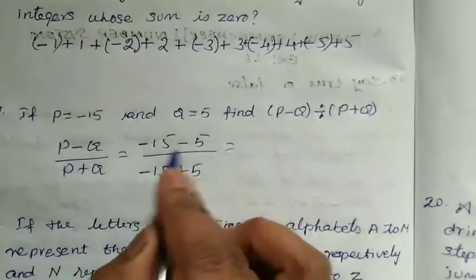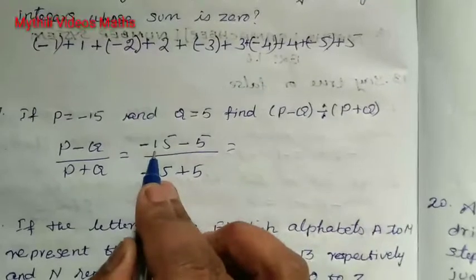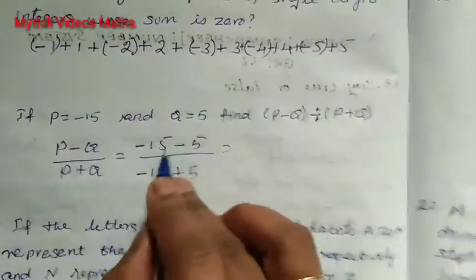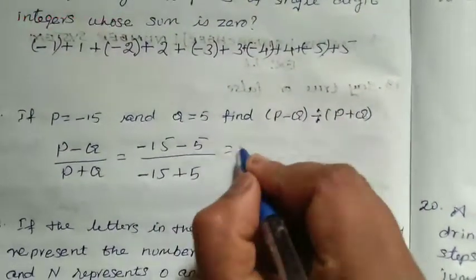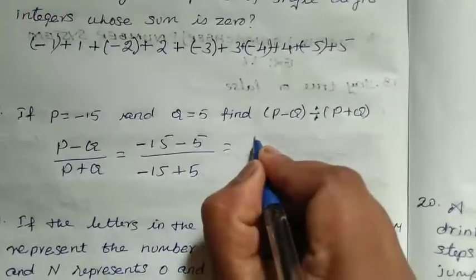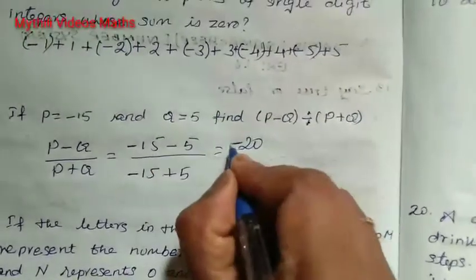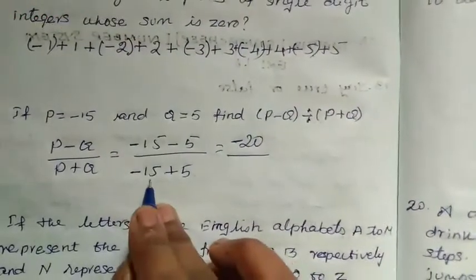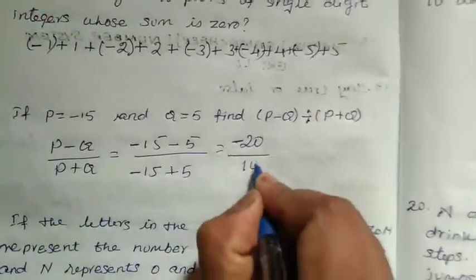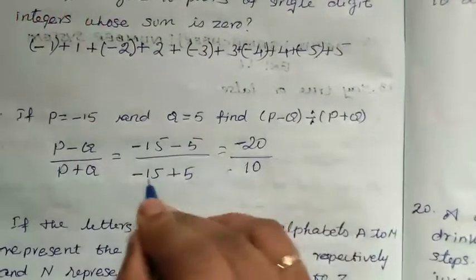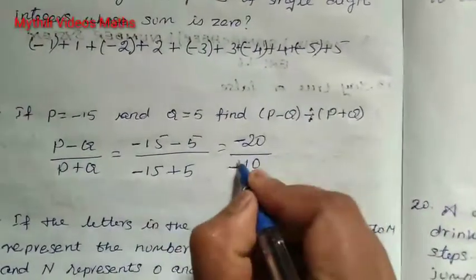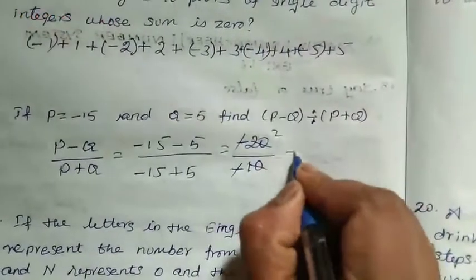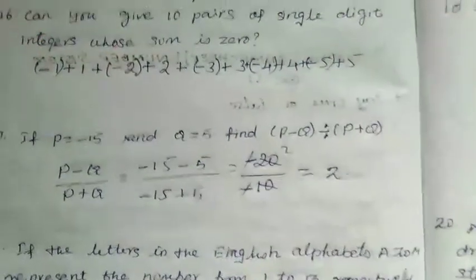In the numerator, minus 15 minus 5 — both same symbol, so we add: 15 plus 5 is 20, and keep the minus symbol, giving minus 20. In the denominator, minus 15 plus 5 — different symbols, subtract: 15 minus 5 is 10, bigger number symbol is minus, giving minus 10. Cancel: minus 20 divided by minus 10 — the minuses cancel, and 20 divided by 10 gives 2. Therefore the answer is 2.